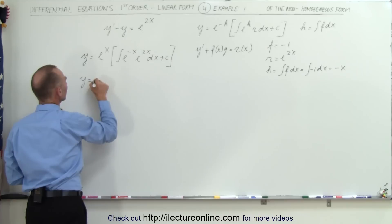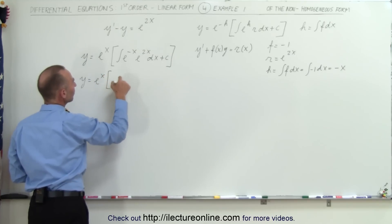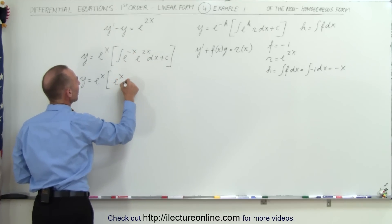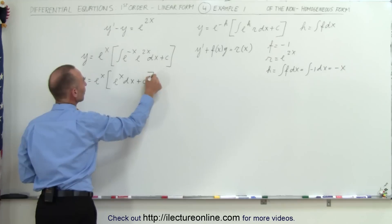So we have y is equal to e to the x times, multiply this, the bases are the same, we add exponents, we get e to the x dx plus a constant of integration.